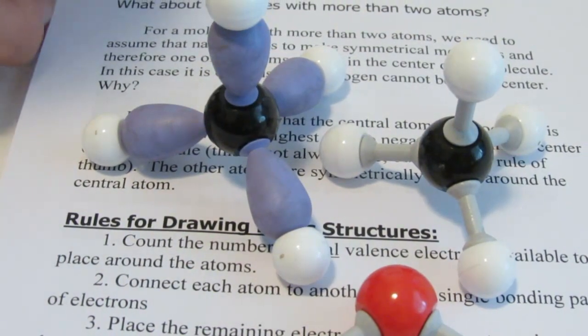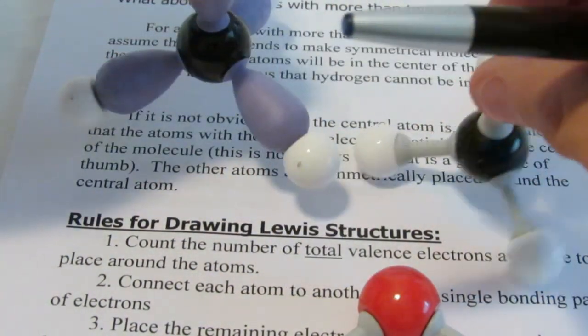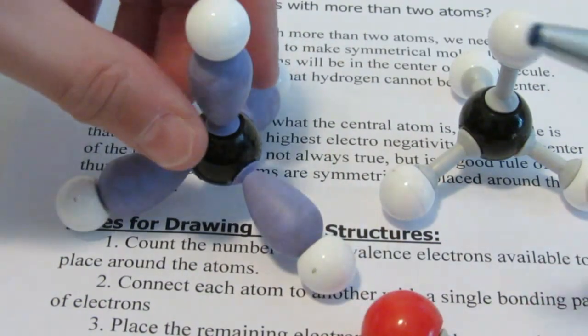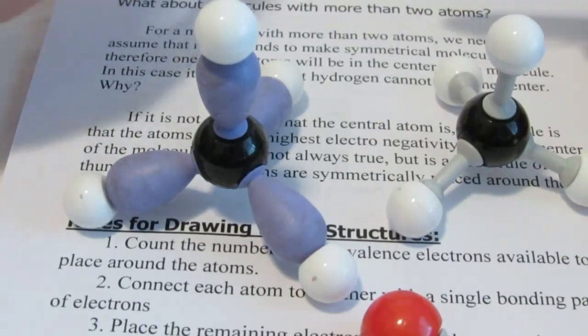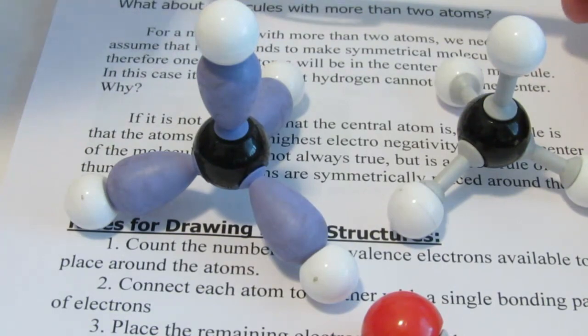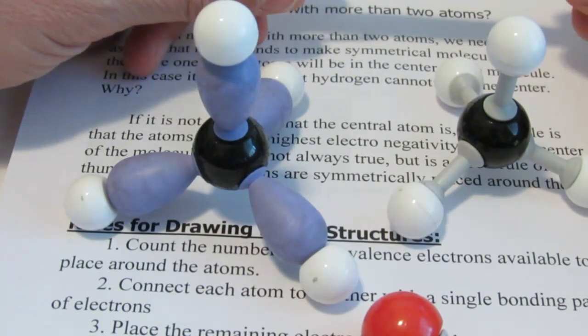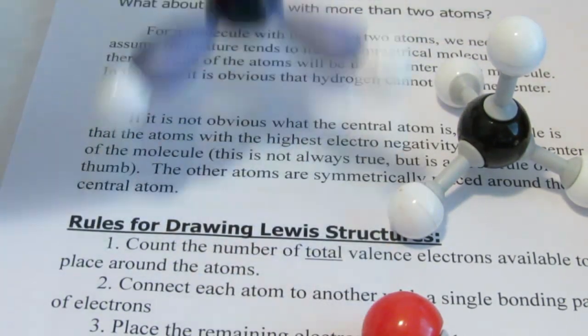Alright folks, we're going to draw some more Lewis structures today and we're going to include shape, bond angle, and polarity. So by now you should be pretty darn good at drawing Lewis structures, counting up valence electrons. And now we're going to add to that a couple more things.